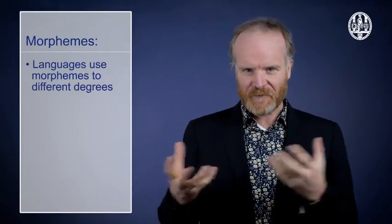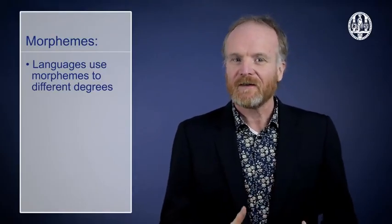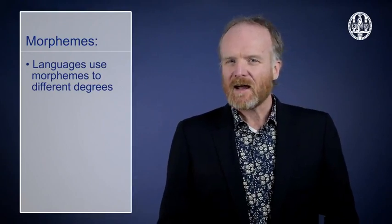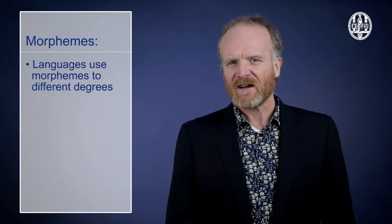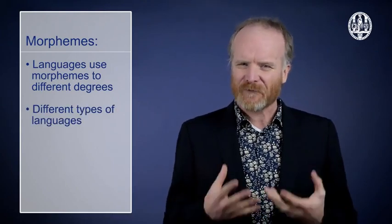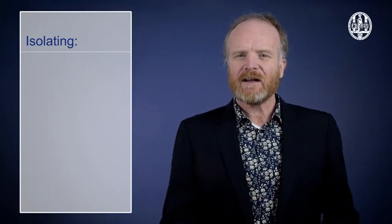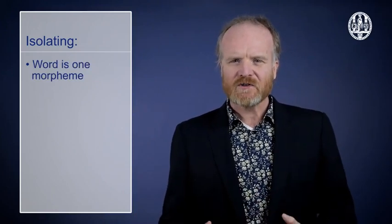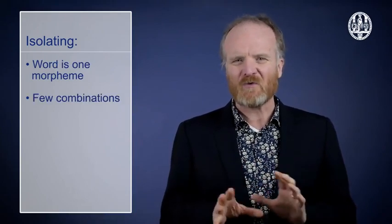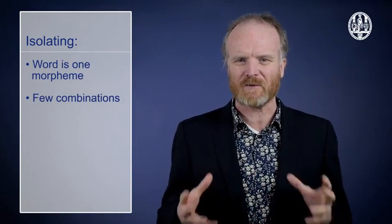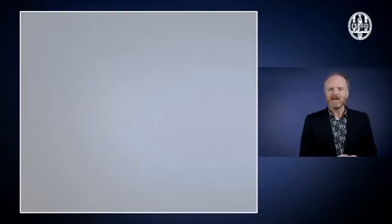Different languages use morphemes, the system of putting morphemes together to different degrees. And that turns out to be very useful for classifying languages. There are different types of languages. The first type is called isolating. In isolating languages, most words are exactly one morpheme and there are very few or no combinations of morphemes to make words. A well-known example of this is Chinese.